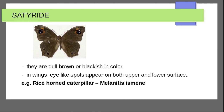Satyridae — they are dull brown or black in color. Wings have eye-like spots on both upper and lower surfaces. Example: rice caterpillar — Melanitis leda.